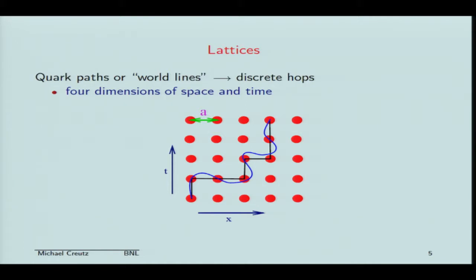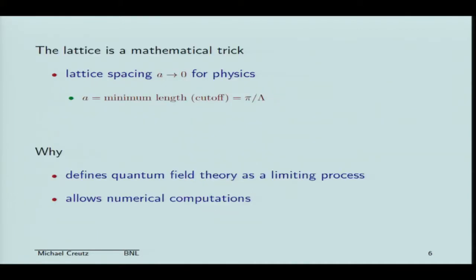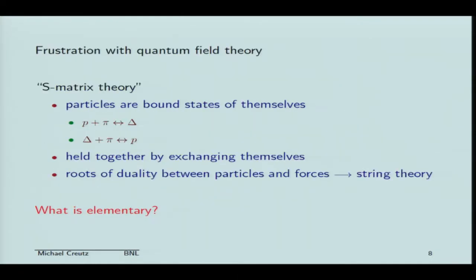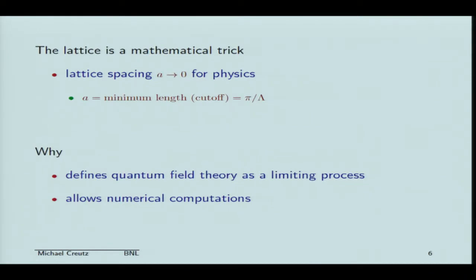The lattice approach takes the idea of these quarks and gluons and cuts the theory off by putting this theory on a lattice. We're going to replace the continuum with a set of hops between nearest neighbor sites. This is a four-dimensional lattice because we're going to put time and space together. The important thing to realize is that this lattice is really nothing but a mathematical trick. We need, at the end of the theory, to take the lattice spacing to zero to get real physics. We should think of the lattice spacing as some kind of a cutoff on the field theory — a minimum length, of order π over some momentum scale.